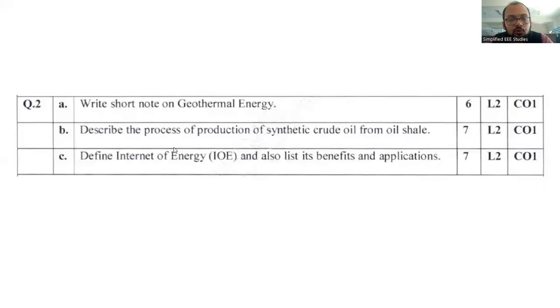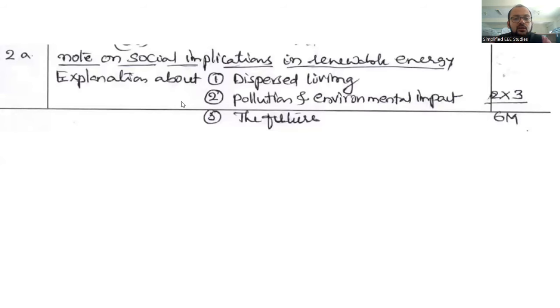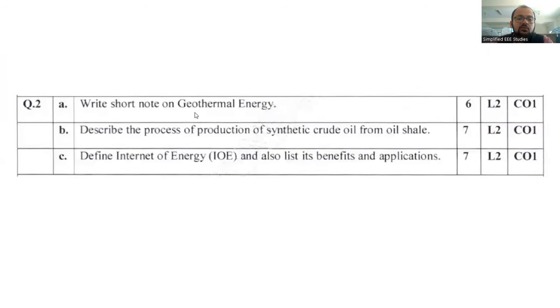We have another option from module one like question number two. Write a short note on geothermal energy, similar kind of question. You have earth crest, extracting the temperature of molten state around 3000 to 4000 degrees Celsius. If you are making use of the steam directly, utilizing the operation of steam turbine generators, then excess electricity can be produced like that. You can elaborate it.